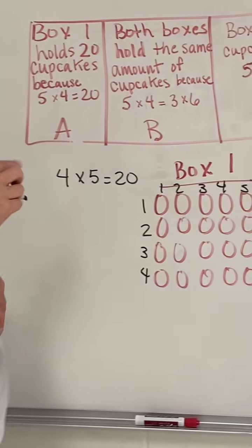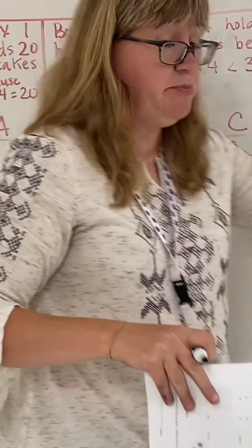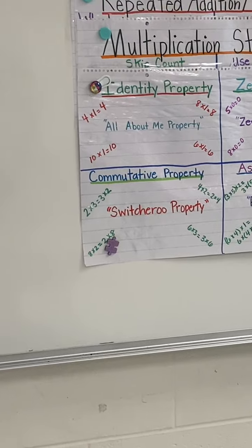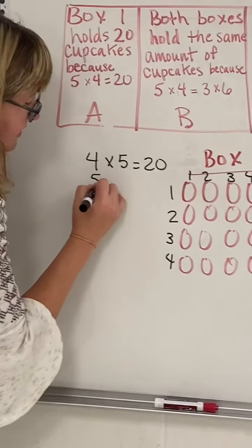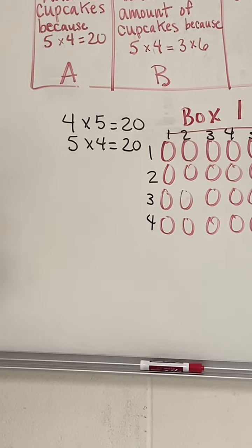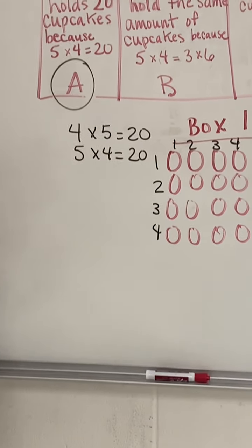And if you remember our commutative property over here, where you can do the switcheroo property. So 4×5 is equal to 5×4. So that one could be true.